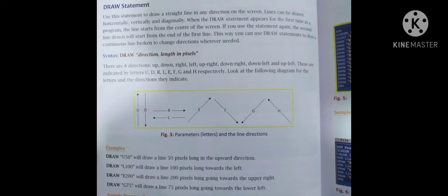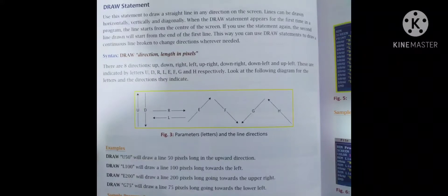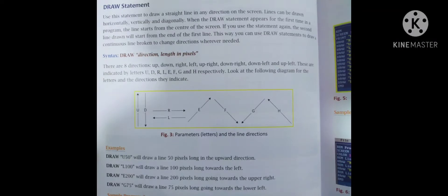You can use the DRAW statement to draw a continuous line broken to change directions whenever needed. The syntax is: DRAW direction and length in pixels. There are 8 directions: up, down, right, left, up-right, down-right, down-left, and up-left, indicated by the letters U, D, R, L, E, F, G, and H respectively.